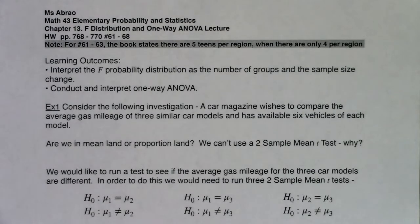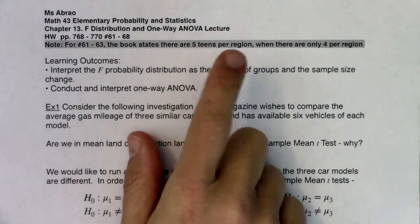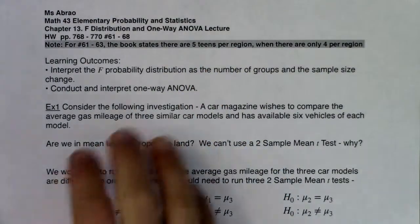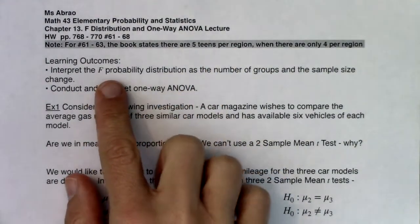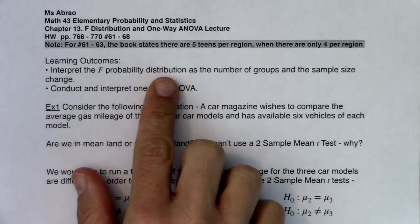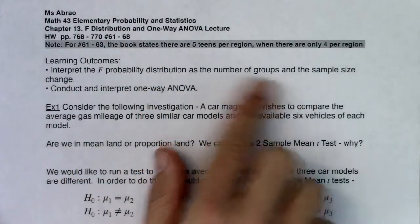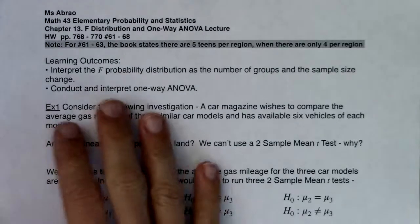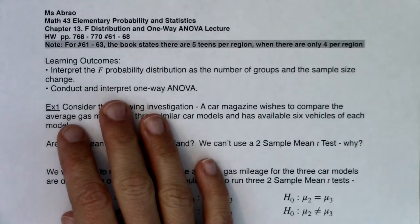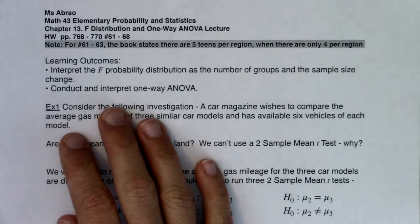All right gang, welcome to your last chapter. Congrats on making it this far. We're going to look at the F distribution and something called one-way ANOVA. We have a little typo in the homework, just be on the lookout for that. By the end of this chapter we should interpret the F probability distribution as the number of groups and the sample size change, and then we're going to conduct and interpret one-way ANOVA.